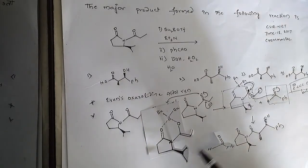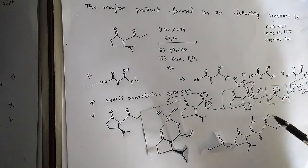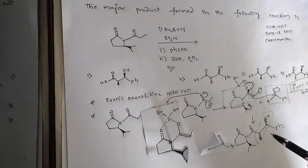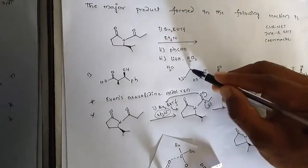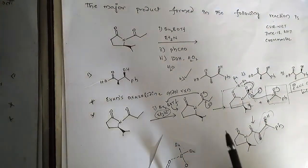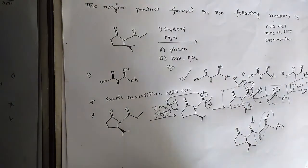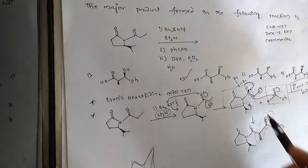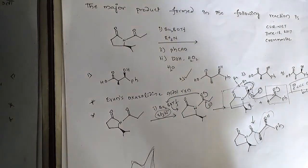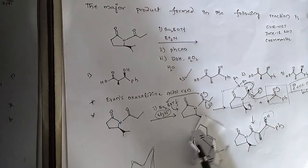The bulkier oxazolidine group directs both the methyl group and the OH group down the plane of the molecule. Looking at the options, the second one is the right answer. This is a simple explanation without going to the Zimmerman-Traxler model, which is the more complicated approach. In simpler terms, we can explain this problem like this using simple 3D paper models.